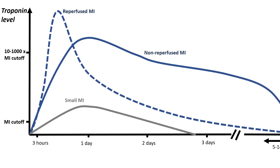One catch to know about delta: in the setting of a large MI, troponin peaks at one day, declines between one to two days, and persists for seven to ten days. Between two days and seven days you have a plateau of troponin. If someone comes with a large MI that occurred a couple of days ago, you may see a high troponin that doesn't change much — that doesn't mean this is not an MI. You're catching them in the late plateau phase of an infarct, and their troponin tends to be very high, not around the gray zone.